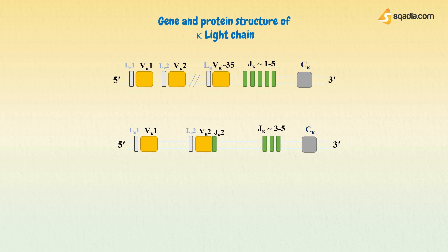To synthesize a kappa light chain, a cell early in the B lymphocyte lineage selects a V kappa exon — for example, VK2 — and after a process of DNA rearrangement involving the VDJ recombinase, it joins it to a J segment, for example, J2. This is called VJ recombination.